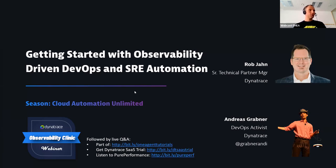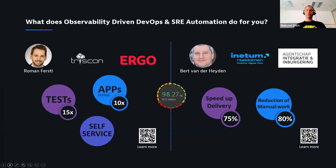Let's get going. Observability-driven DevOps and SRE automation is about helping organizations automate things around getting new, better code into production. Dynatrace helps these organizations make better automated data-driven decisions around SLOs. Examples include Ergo and Triscon, who have integrated Dynatrace into their delivery pipelines, getting automated feedback on apps coming out of development — automatically tested and evaluated — and brought it to a self-service stage, orchestrating everything in the delivery process until things reach production.